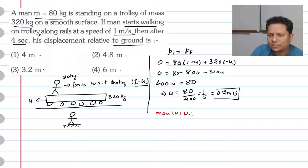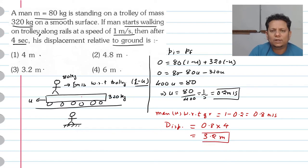Now for the man, the man's velocity with respect to ground will be 1 minus 0.2, which is 0.8 meter per second. And his displacement with respect to ground will be his speed 0.8 multiplied by time 4 seconds. So this equals 3.2 meters.